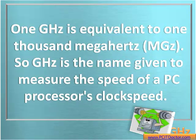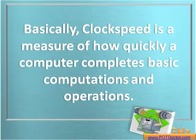1 gigahertz is equivalent to 1,000 megahertz. Gigahertz is the name given to measure the speed of a PC's processor clock speed. Basically, clock speed is the measure of how quickly a computer completes basic computations and operations.